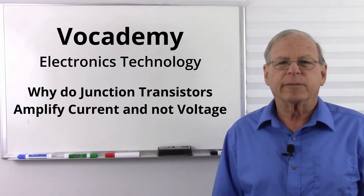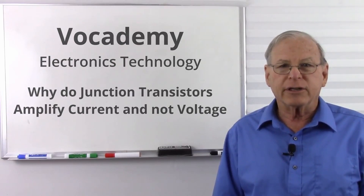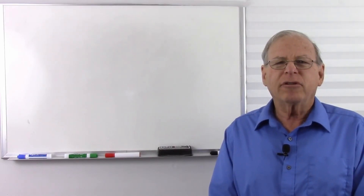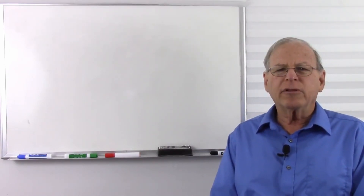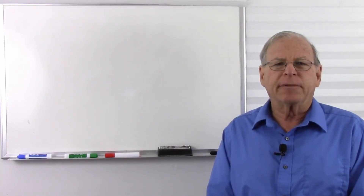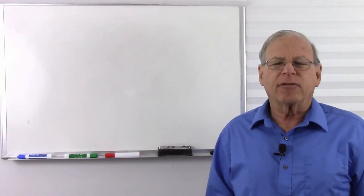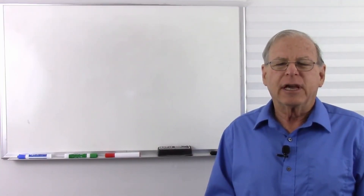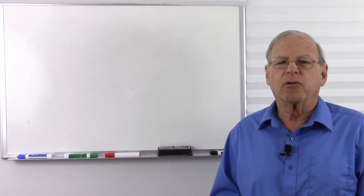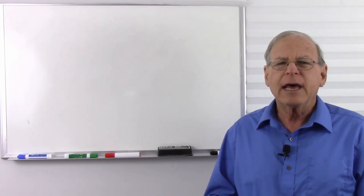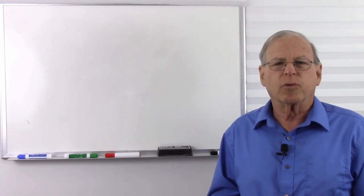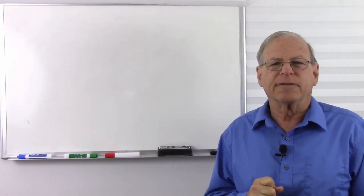Today I'm going to answer a question from a student, Rajiv Pandaya — I hope I pronounced that correctly. The question is from the video about small signal amplifiers and boils down to: why do bipolar junction transistors amplify current and not voltage? The answer is, they do amplify voltage. I think that's an unfortunate term — I prefer to say they are current controlled rather than voltage controlled, but even that is not a good way to put it. So let's take a look at how bipolar junction transistors work and see why we say they amplify current.